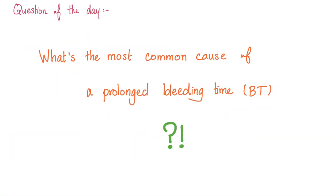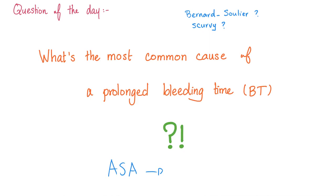Question of the day: what's the most common cause of a prolonged bleeding time? Some people will say Bernard-Soulier syndrome — this is very rare. How about scurvy? This is not the 15th century. The most common cause of a prolonged bleeding time today is aspirin, acetylsalicylic acid, because aspirin inhibits cyclooxygenase. When you inhibit cyclooxygenase, this leads to decreased thromboxane A2, which leads to decreased platelet aggregation, and the bleeding time will be prolonged because it takes longer to form a platelet plug and stop the bleeding.